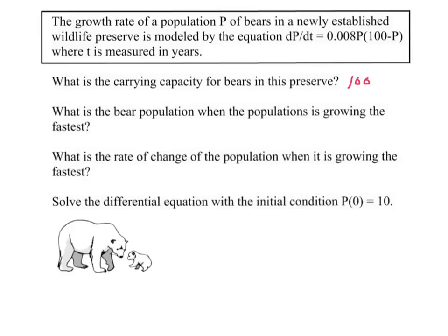Now, what's the bear's population when it's growing the fastest? Well, think about the graph of a logistic equation when it goes like this. Here's, here's its carrying capacity. It will be growing fastest, kind of at this inflection point, where we change from concave up to concave down. That inflection point is always going to be halfway to the carrying capacity. So for us, that would be 50.